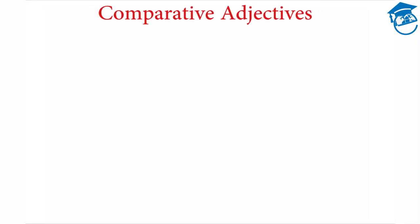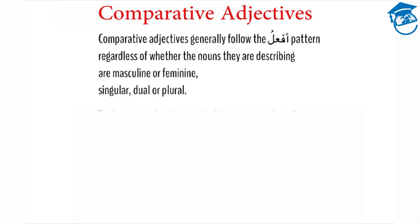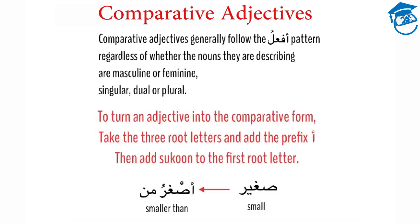The comparative adjective generally follows the ephalu pattern, regardless of whether the nouns being described are masculine or feminine, singular, dual, or plural. To turn an adjective into the comparative form, take the three root letters and add the prefix aleph with hamza, then add sukun to the first root letter.